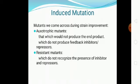Auxotrophic mutant means that because of mutation the organism will not produce the end product. Suppose in an unbranched pathway A is converted to finally E, which is the end product. If the organism doesn't produce the end product E, we call such an organism an auxotrophic mutant. E is usually a primary metabolite required for microbial growth, so when they don't produce E they cannot grow properly. Such organisms are called auxotrophic or nutritional mutants.